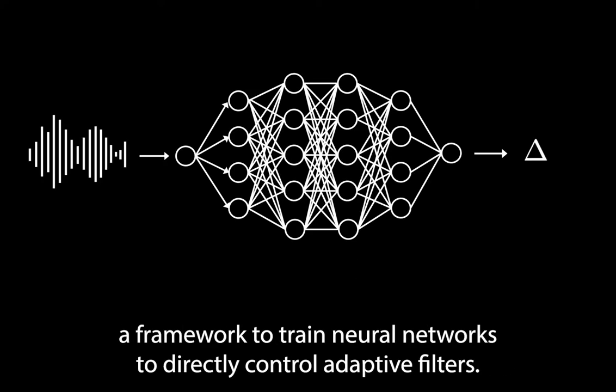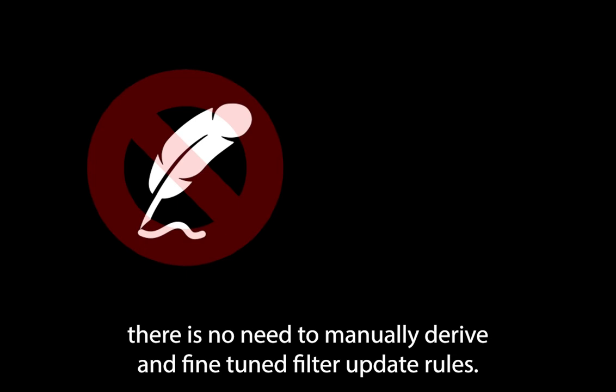In this work, we frame the development of adaptive filters as a meta-learning problem and present a framework to train neural networks to directly control adaptive filters. Using our method, there is no need to manually derive and fine-tune filter update rules.